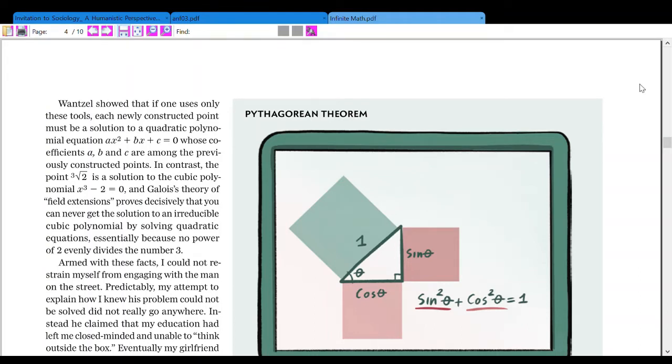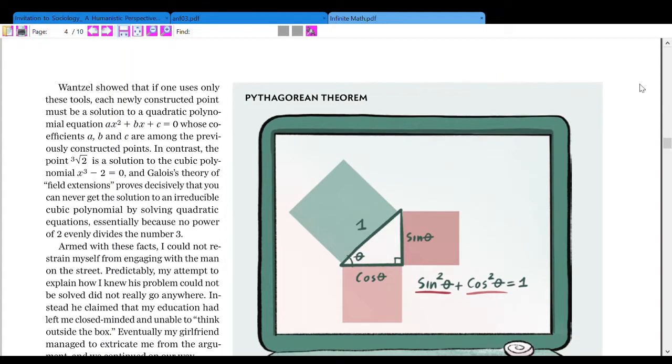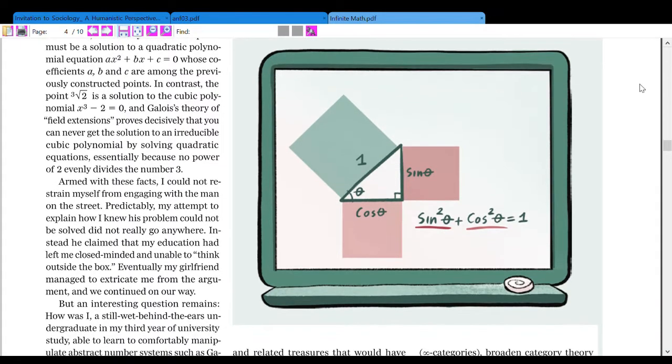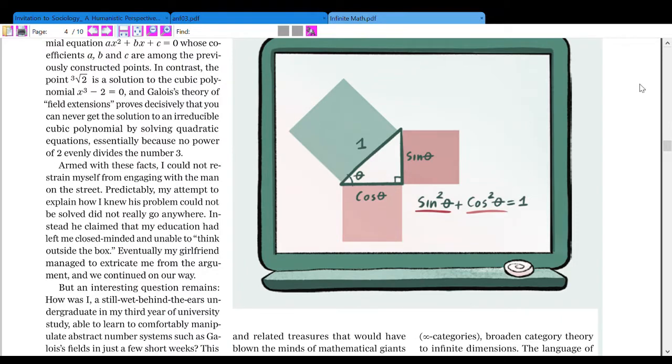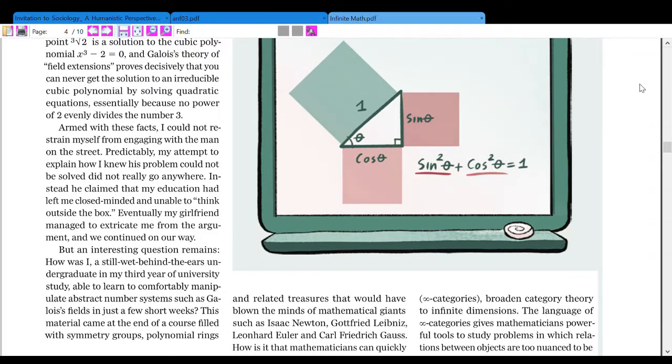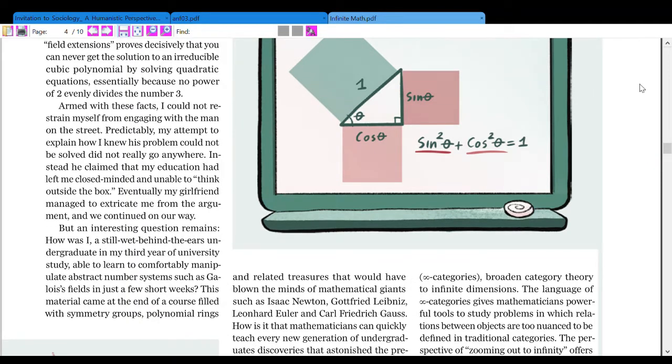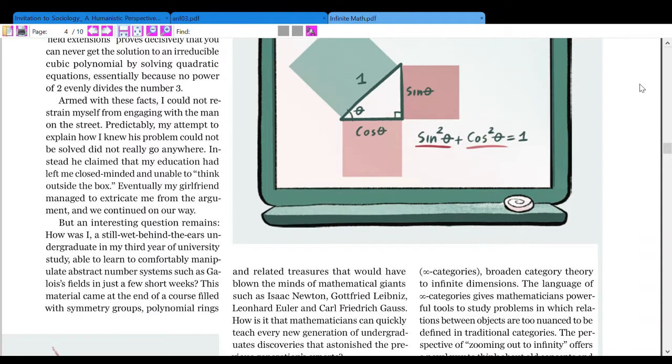Wantzel showed that if one uses only these tools, each newly constructed point must be a solution to a quadratic polynomial equation ax squared plus bx plus c equals zero, whose coefficients are among the previously constructed points. In contrast, the point cube root of two is a solution to the cubic polynomial x to the third minus two equals zero. And Galois theory of field extensions proves decisively that you can never get the solution to an irreducible cubic polynomial by solving quadratic equations, essentially because no power of two evenly divides the number three.